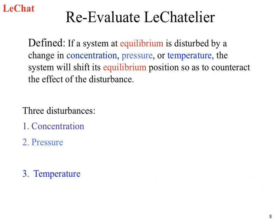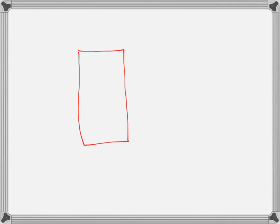Let's go ahead and come up with a dynamic picture for this. If we look at a reaction, this is a good way to approximate it. We'll connect two chambers — this will be our reactant chamber. We've got a second chamber with our products in it.